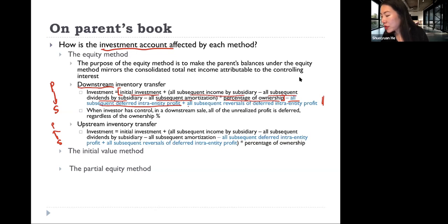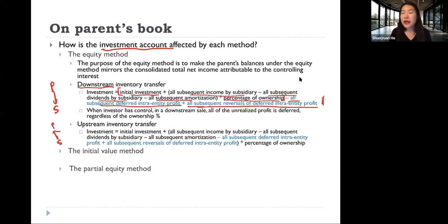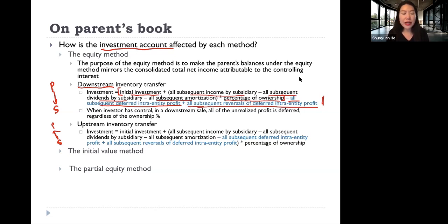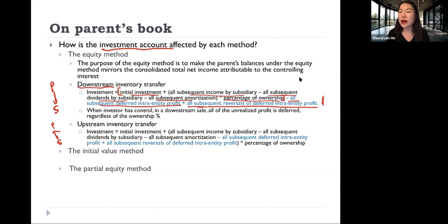We also need to add back all subsequent reversals of deferred Intra-Entity Profit. Since inventory is a short-term asset, the assumption is that its turnover should be within one year or one operating cycle. So if the intra-entity profit is not recognized in the current year, the default assumption is it should be reversed in the next year.